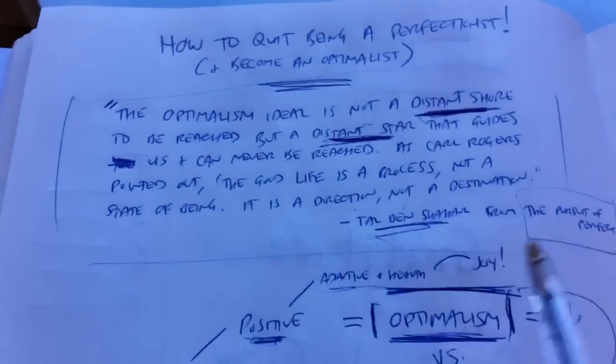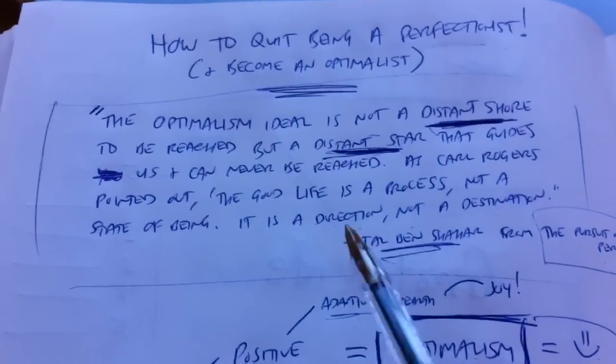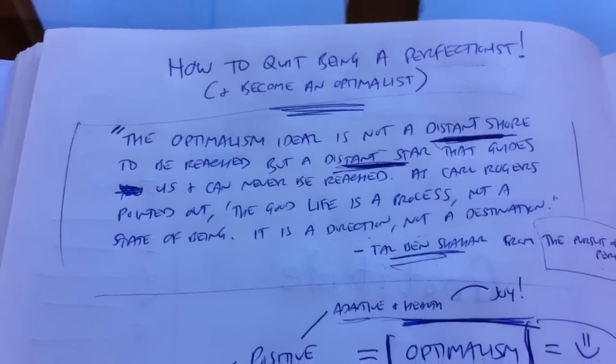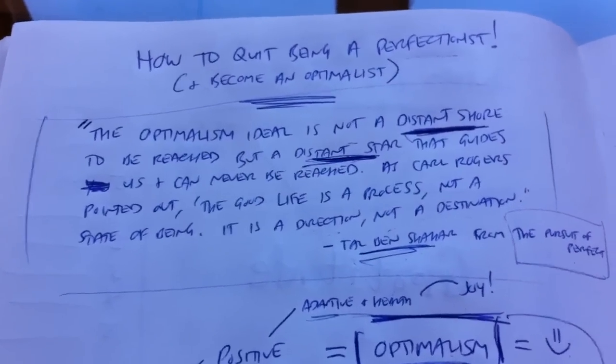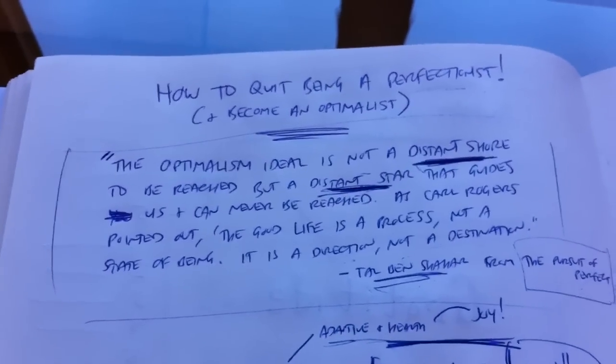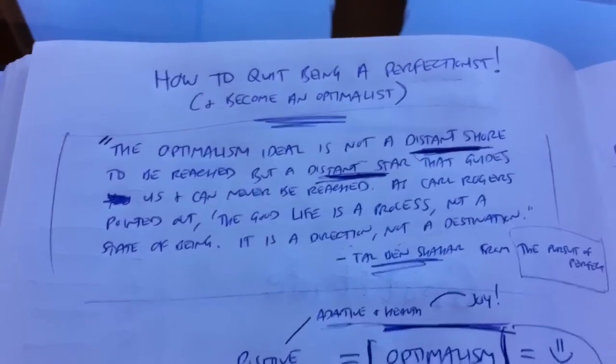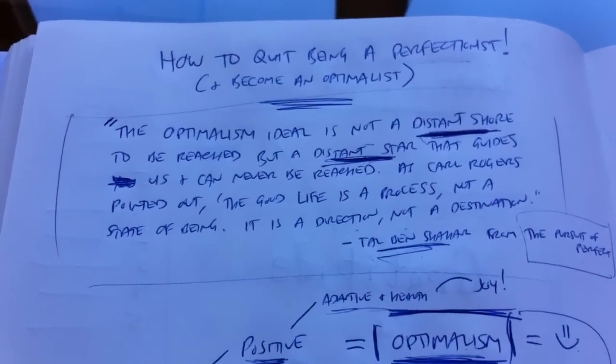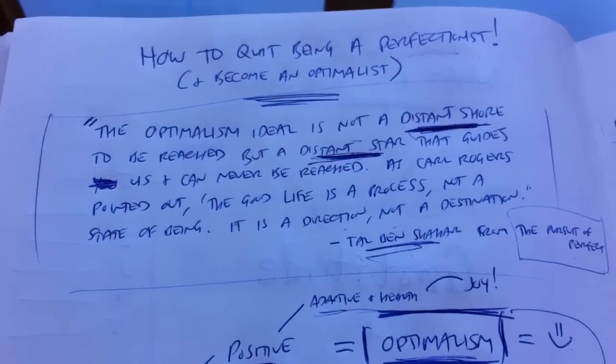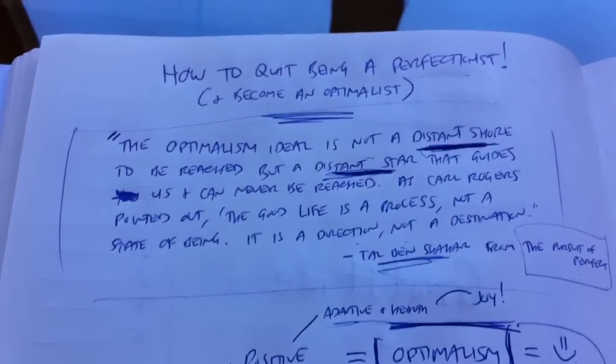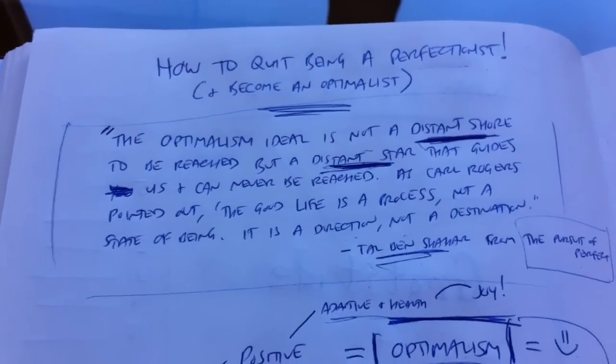Brilliant, brilliant stuff, and I want to kick this one off with a little quote. It's from Tal. He says, the optimalism ideal is not a distant shore to be reached, but a distant star that guides us and can never be reached. As Carl Rogers pointed out, the good life is a process, not a state of being. It is a direction, not a destination.